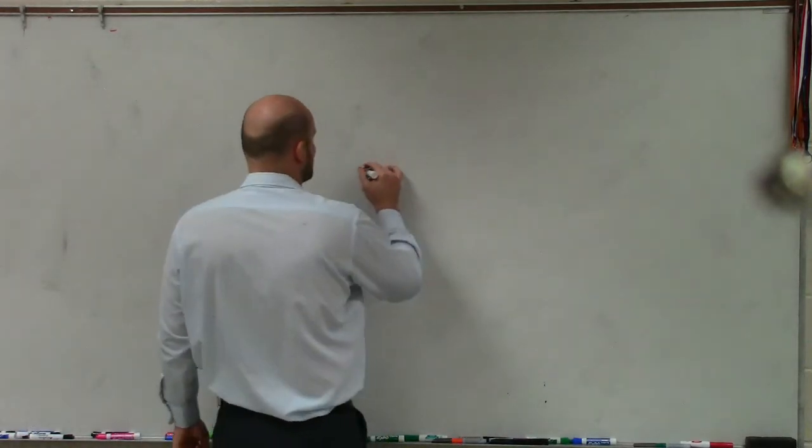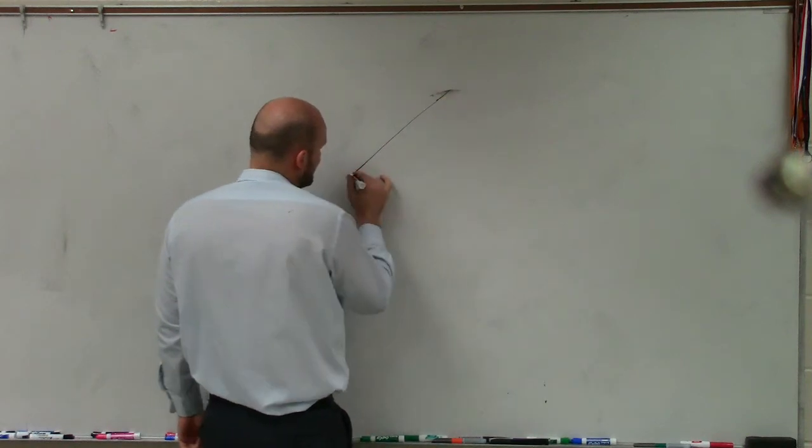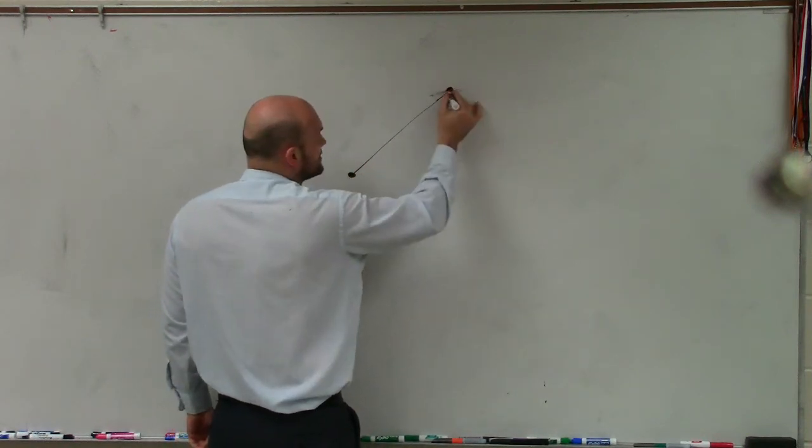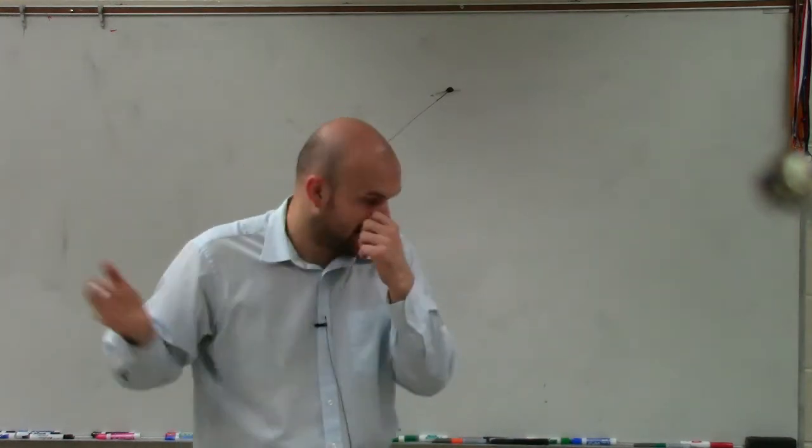a vector is what we call a directed line segment. And the way that we can represent that, well, a line segment is a line segment that ends at two points and is a connection from an initial point to a terminal point.